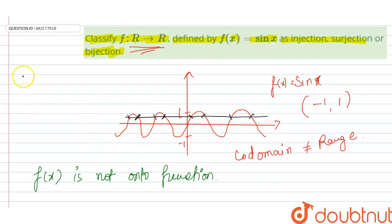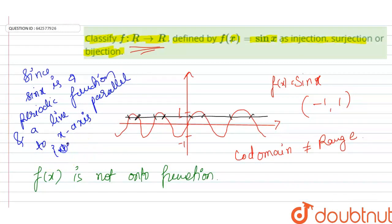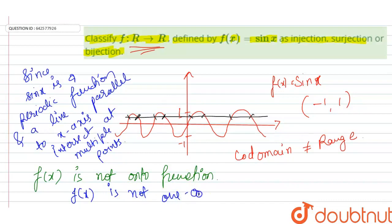Since sin(x) is a periodic function, a line parallel to the x-axis intersects the graph at multiple points. Therefore, the function f(x) is not one-one. Since it is neither onto nor one-one, it is not a bijection.